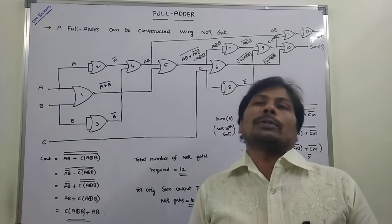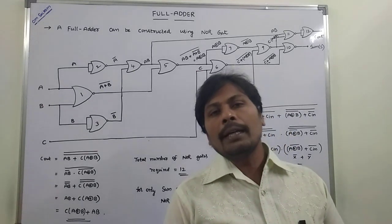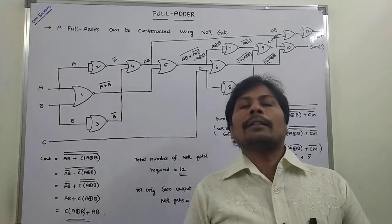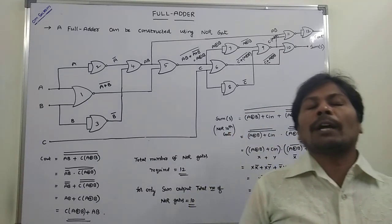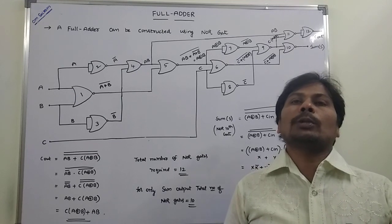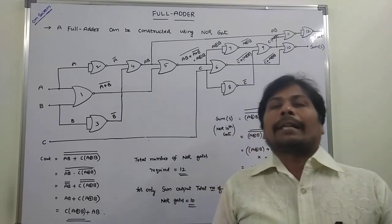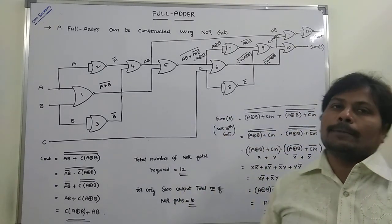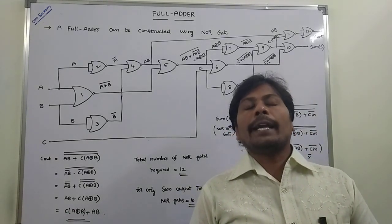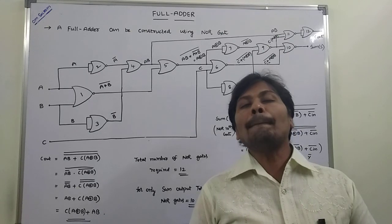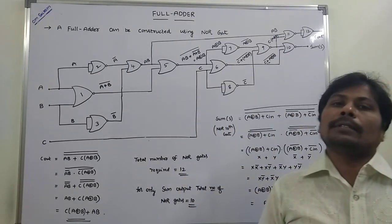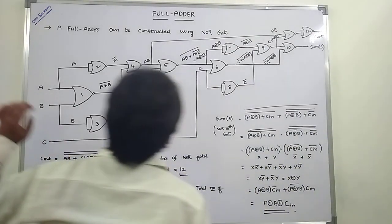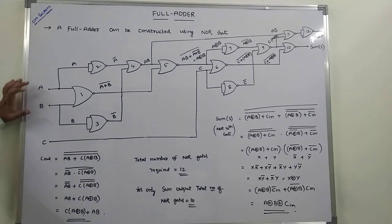How we are getting these two outputs in the full adder by using NAND gates. To implement full adder using NAND gates, the total number of NAND gates required is equal to 12. How many NAND gates are required to get the sum output of the full adder? That is equal to 10 NAND gates.